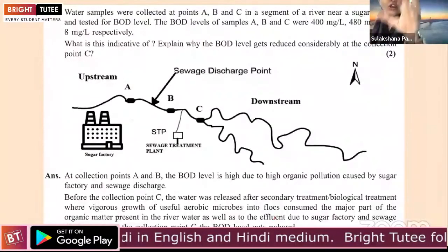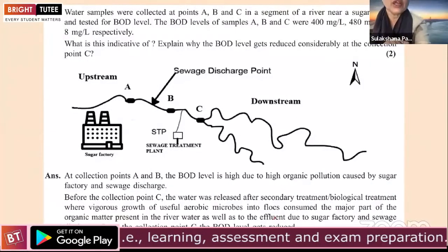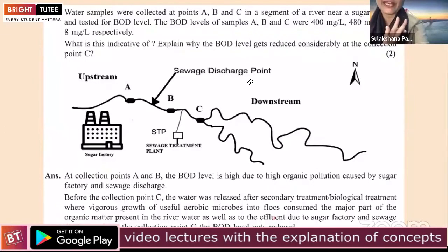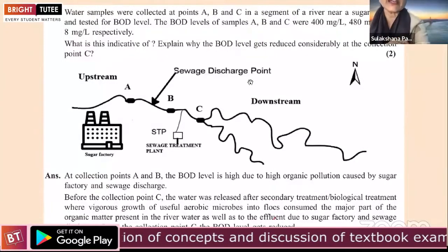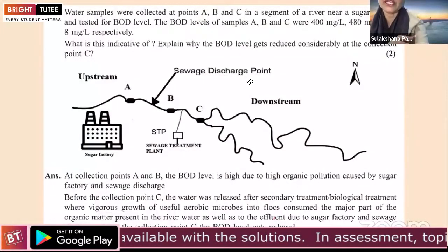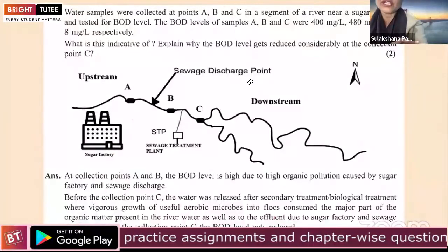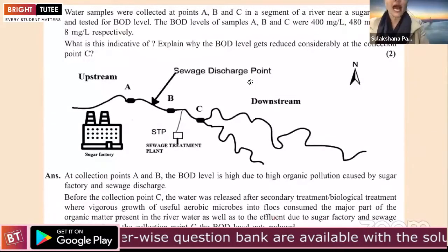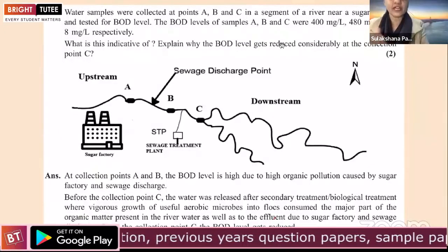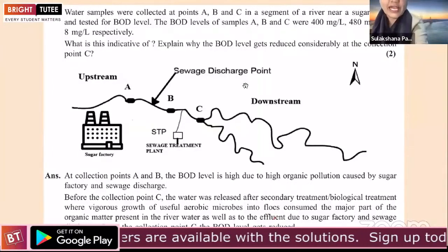The water samples were collected at points A, B, and C in a river segment near a sugar factory and tested for BOD level. BOD is a very important topic because students get confused about BOD conditions. You can change the digits or slightly modify the situation or diagram of this question. This is based on NCERT Exercise Question 11. You can also take help from NCERT Exemplar, which has many application-based questions from the Microbes chapter.